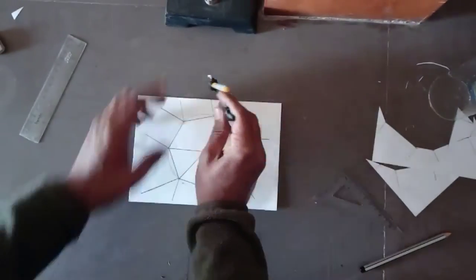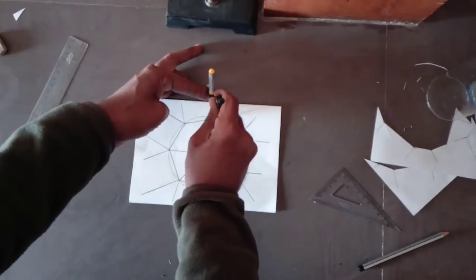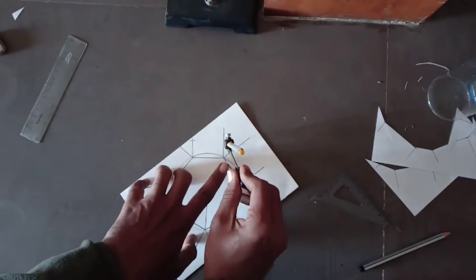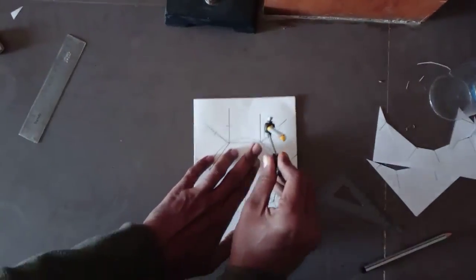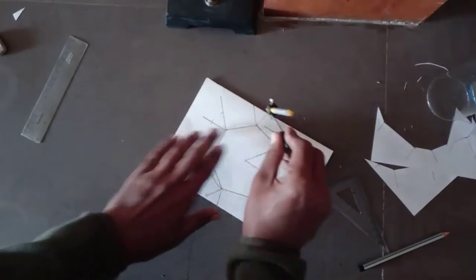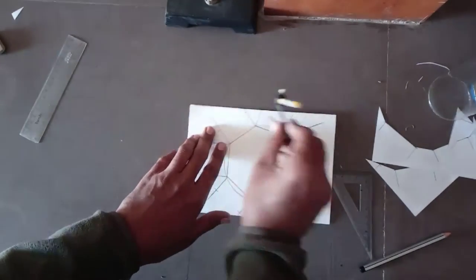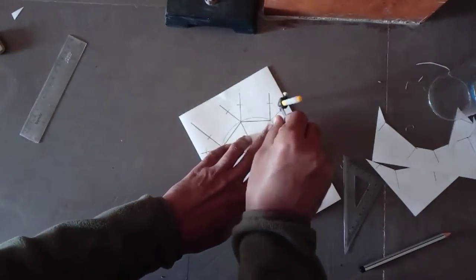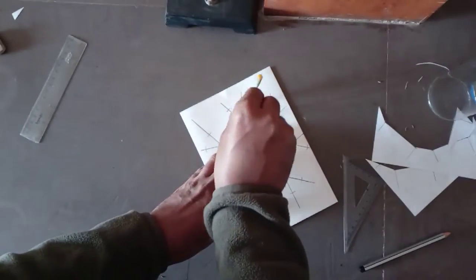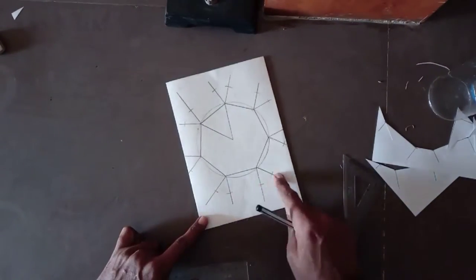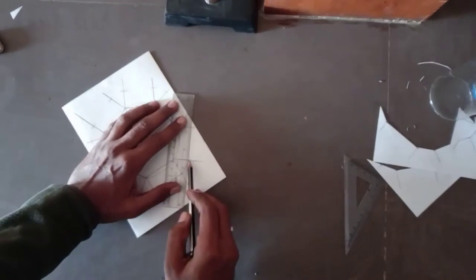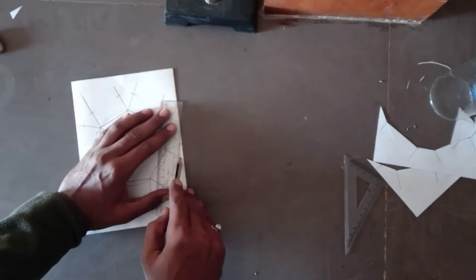Now measure the length of the shortest line. We have to measure the length of shortest perpendicular line. And make a cut at every line with this measurement. Now join all these cut marks.